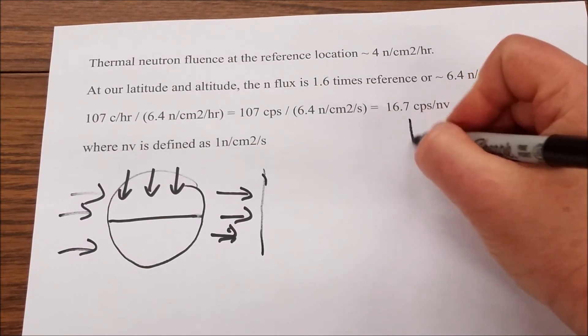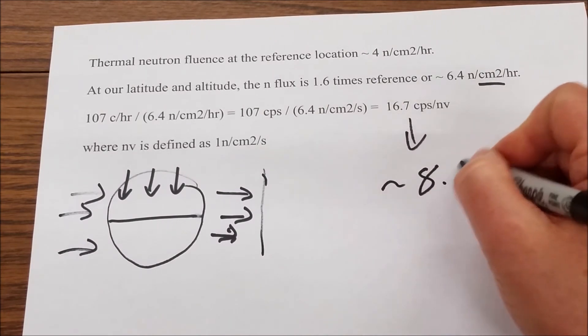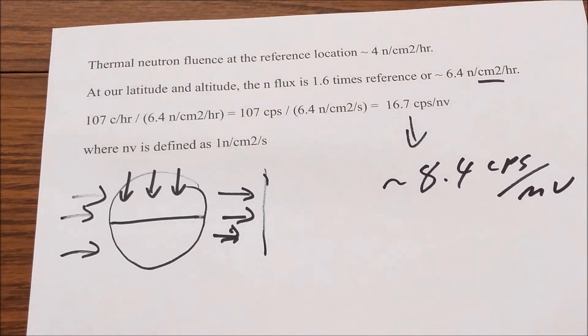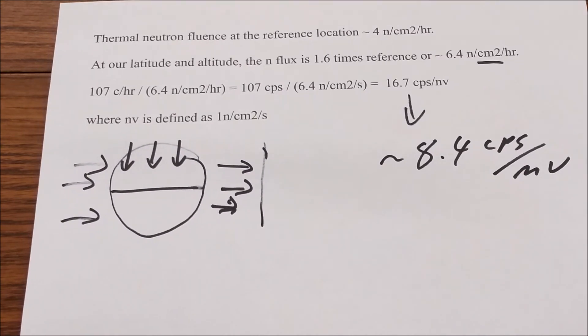So this number here becomes around 8.4 cps per nv. And that is pretty much spot on with also how I calculated it theoretically what kind of efficiency we're supposed to have for a detector of that size.